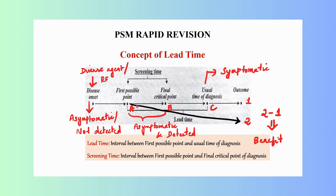Now let's consider the next point as Point A, which is the first possible point. It is the first possible point where the disease can be diagnosed with the help of a screening test. Here again, the person will be asymptomatic, but you will be able to diagnose the disease with the help of a screening test.